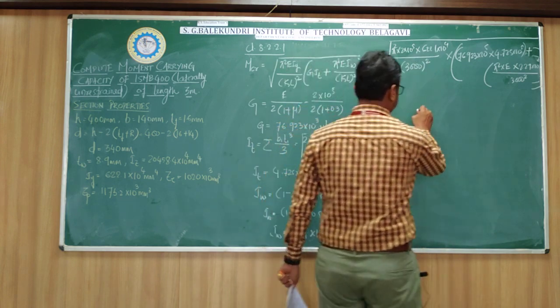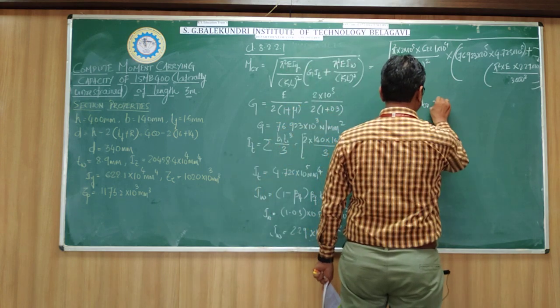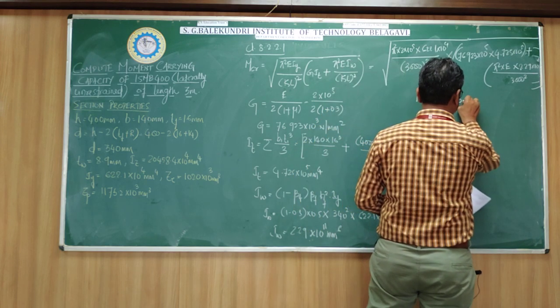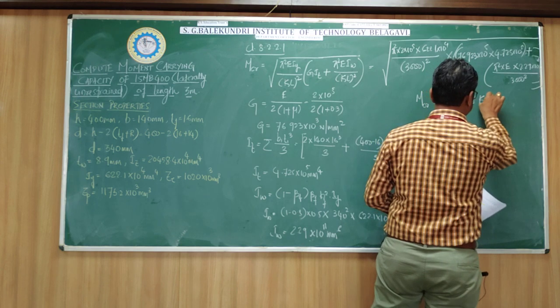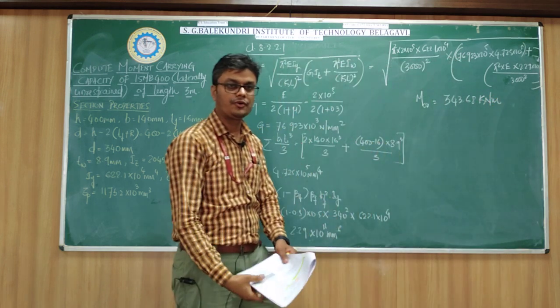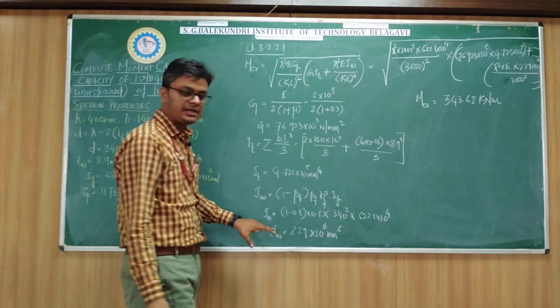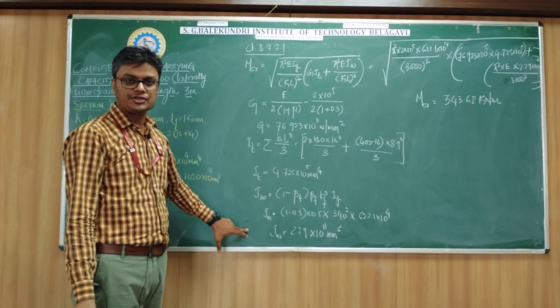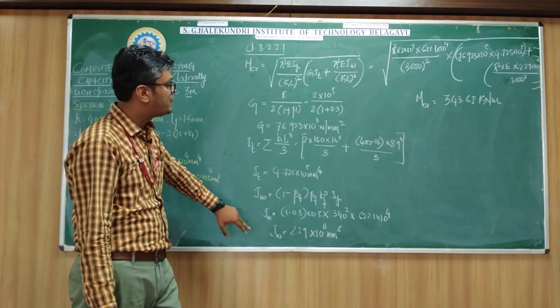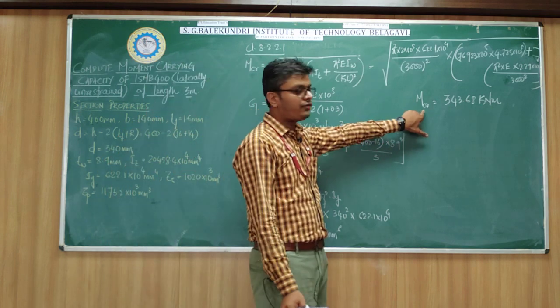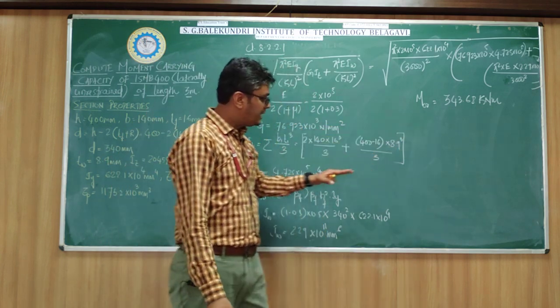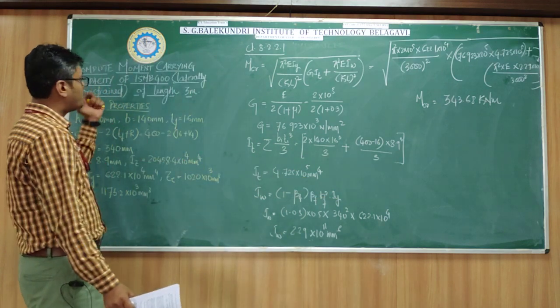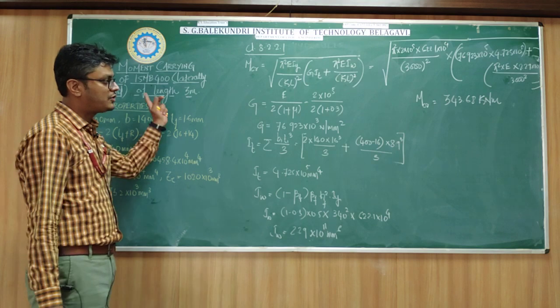Now if you substitute it back and calculate, you are getting elastic critical moment as 336.68 kNm. The things are very simple. You can work out each and every term. All these formulas are given in IS800-2007, and once you substitute back all these things, you can get the value of elastic critical moment.